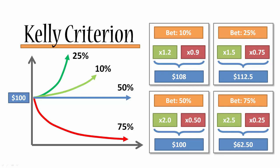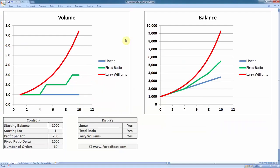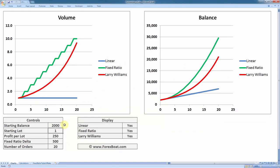You will also learn how to use the Kelly criterion and the Kelly chart to break down your risk into segments, starting from conservative to aggressive to insane risk taking. Finally in this course you will get to take away two money management strategies: the famous Larry Williams method and the fixed ratio method.